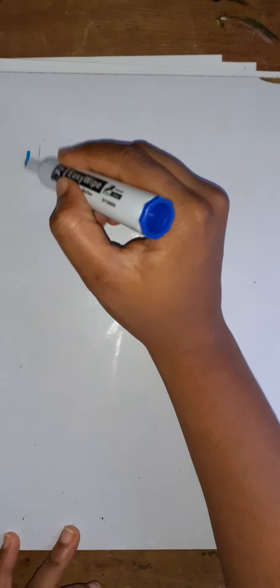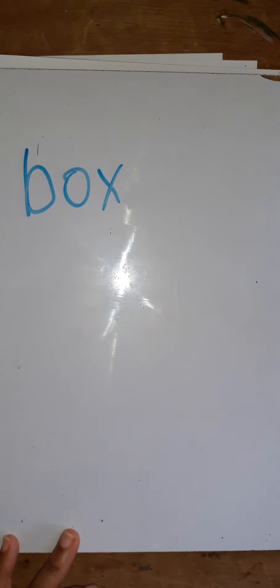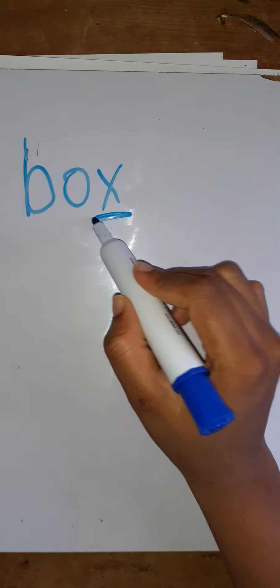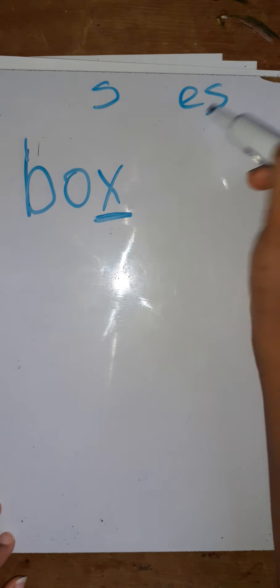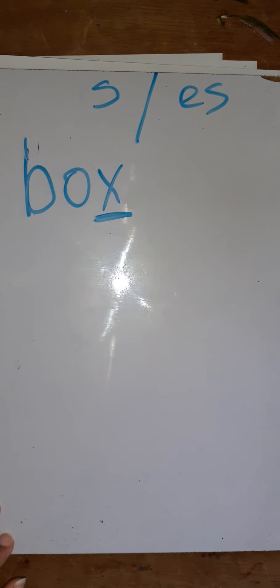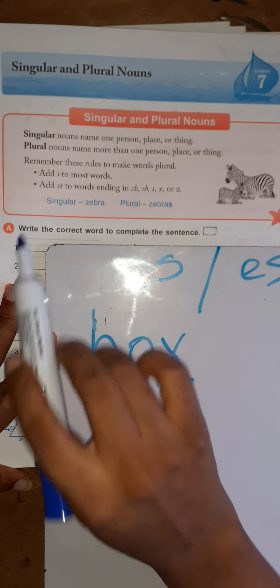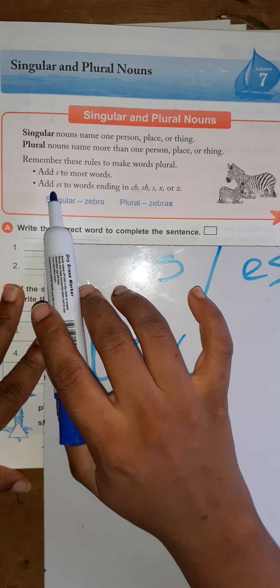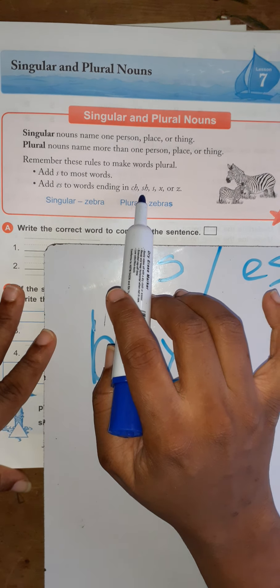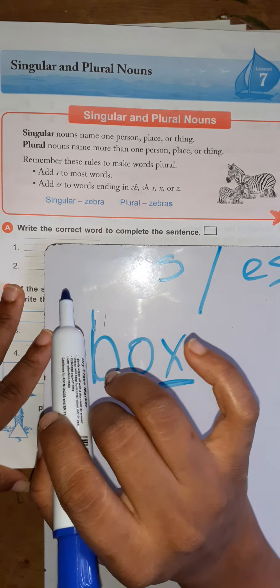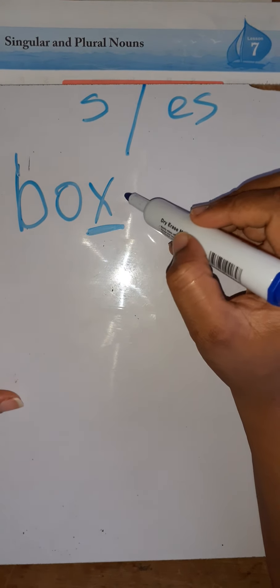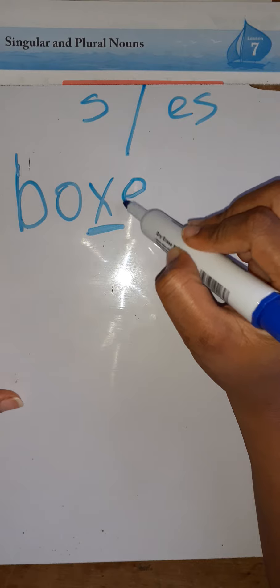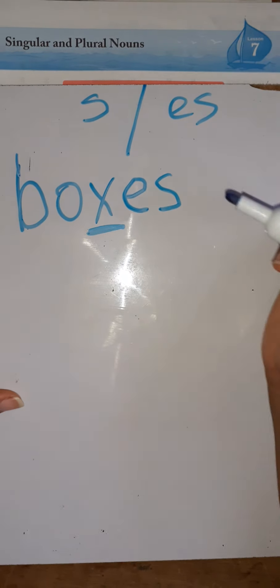Let's look at the word box. Do you remember the rule? When a word ends in X, what do you add — S or ES? Let's look back. You add ES to words ending in CH, SH, S, X, or Z. So box ends in X, and to make box plural, you add ES — box becomes boxes.